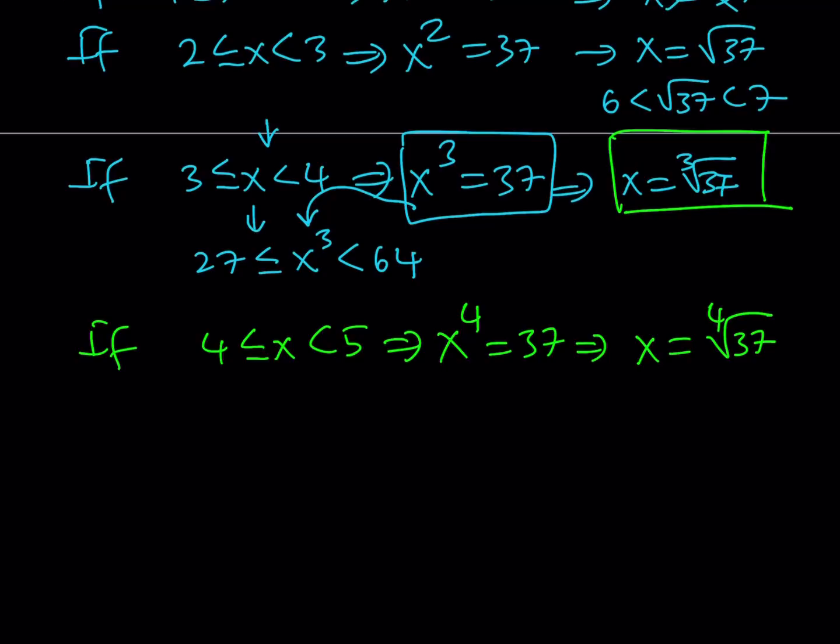Now, the 4th root of 37 is obviously less than, what is the 4th root of the number that I'm looking at? 81, right? So it's less than the 4th root of 81, which means that x is actually less than 3. Well, our initial assumption was that x is between 4 and 5, so this is not going to work. What happens if you continue this pattern? You're going to notice that we're not going to get any solutions from this point on, which means that this number is probably the only solution.